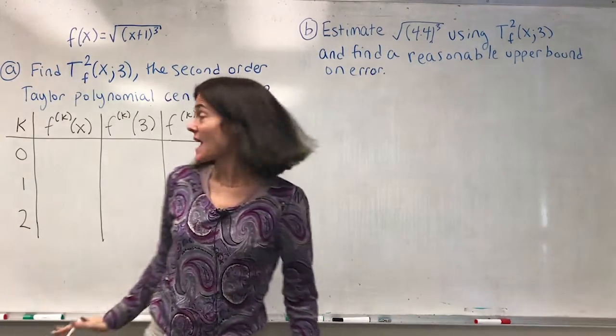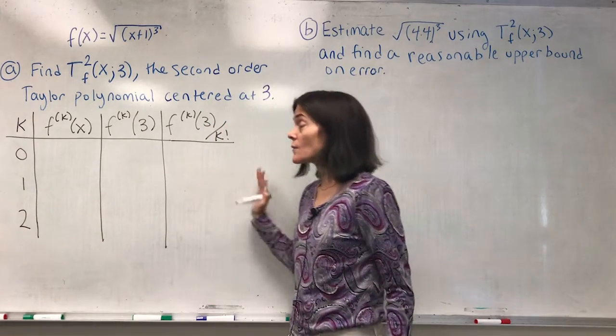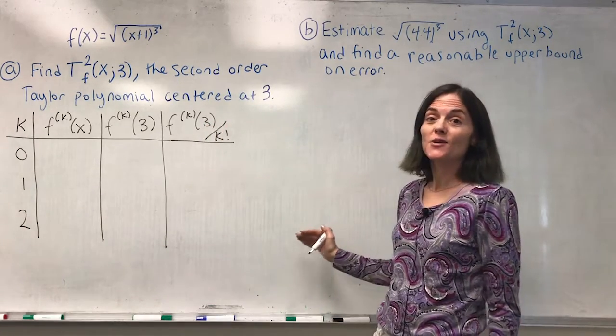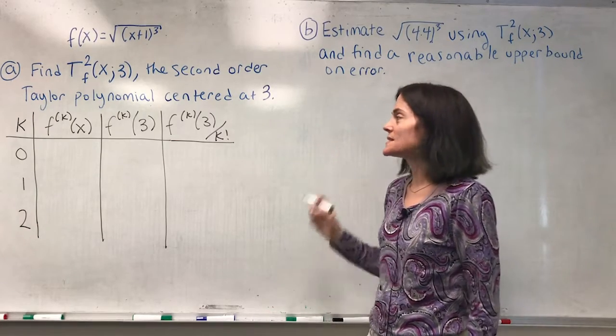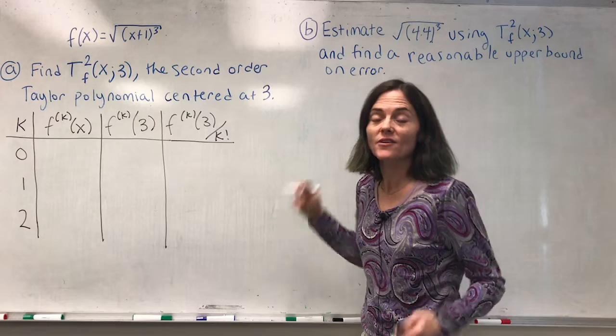Well, if all I was doing was part A, this would be the only chart I would need, and then I could write out the second order Taylor polynomial. If we look ahead, we know we're going to be finding an upper bound on error.